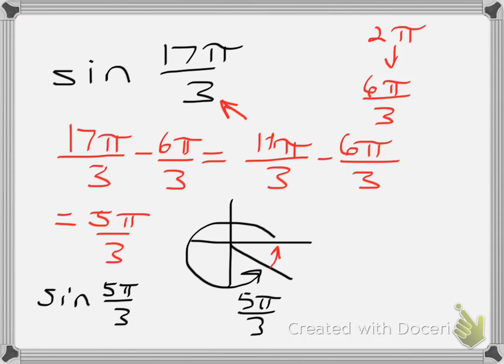Since we're talking about one full rotation, remember this is the same thing as 6 pi over 3. So in other words, what's the difference from 5 pi over 3 to 6 pi over 3? That's going to be pi over 3.